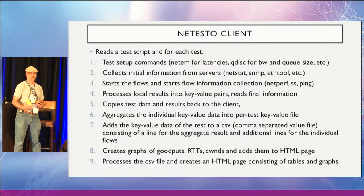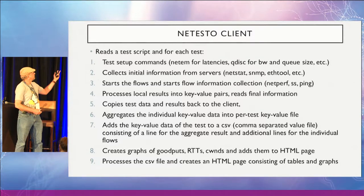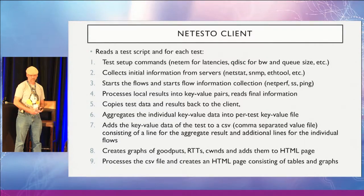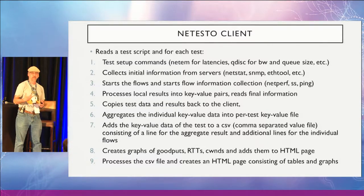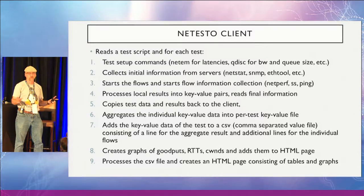The reason to save all that system state is that many times after you run an experiment, you're analyzing the data and you see something unexpected. The first thing you want to do is make sure that nothing was set up on the system that affected the results. Then it starts flows and begins flow data collection using Netperf. It uses SS to collect information about the flows — congestion windows, RTTs, retransmits — and runs ping to measure delays. When the test is finished, it locally processes information and creates a key-value pair file. All the data is copied back to the controller, which aggregates the individual test key-value files into an aggregate, and can also append a comma-separated value file with the results.